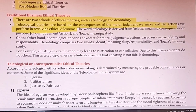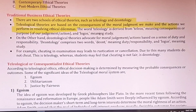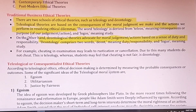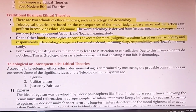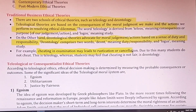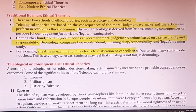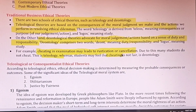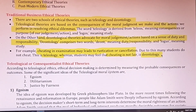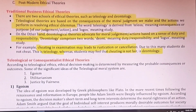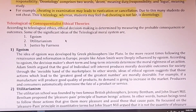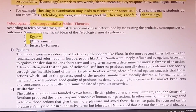Deontology advocates moral judgment and actions based on the sense of duty and responsibility. For example, regarding cheating in an examination: a student may avoid cheating due to fear of cancellation or rustication — that is teleology — whereas a student who feels cheating is an unfair practice is motivated by deontology. The teleological or consequentialist theory is divided into three systems: egoism, utilitarianism, and justice by fairness.